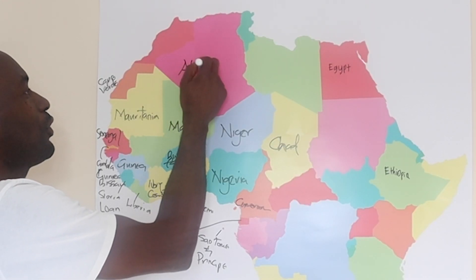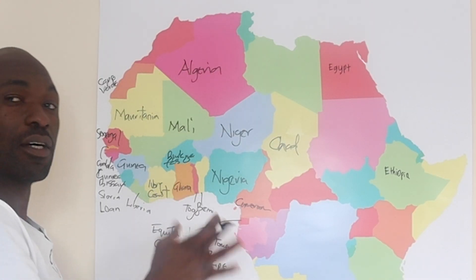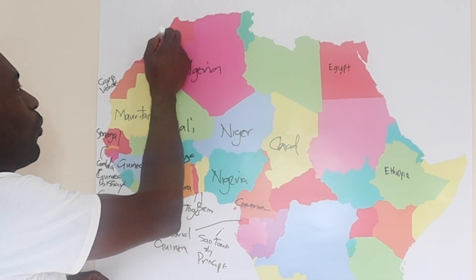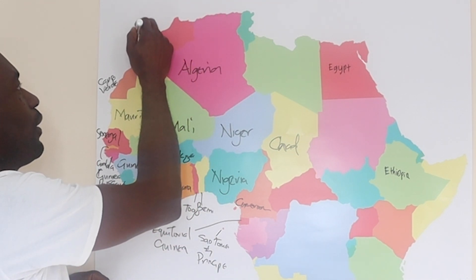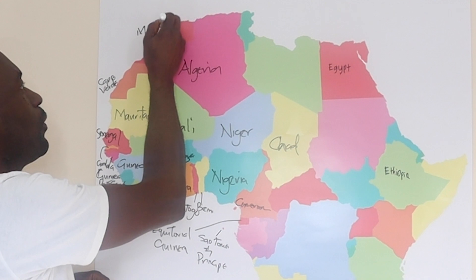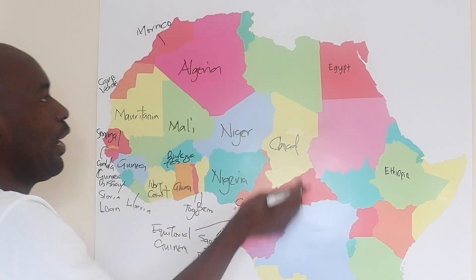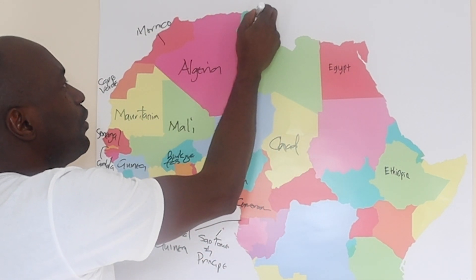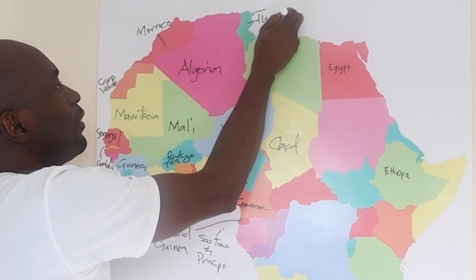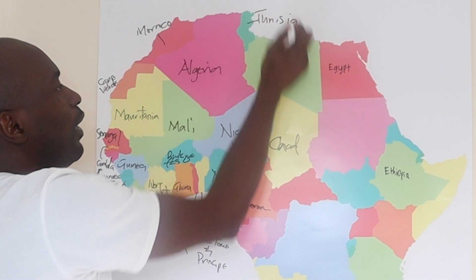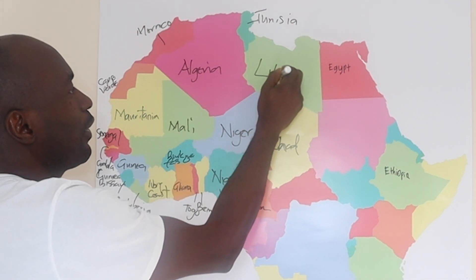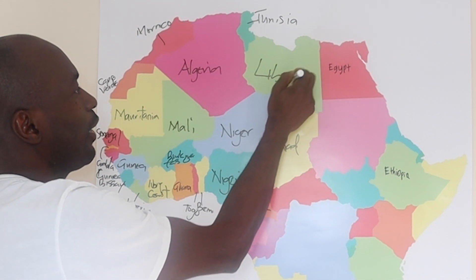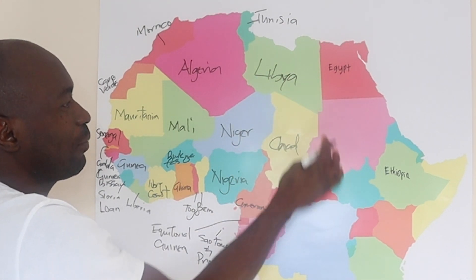So which is the biggest country in Africa in terms of land mass? And Morocco is here. And here we have Tunisia. And we have Libya here.